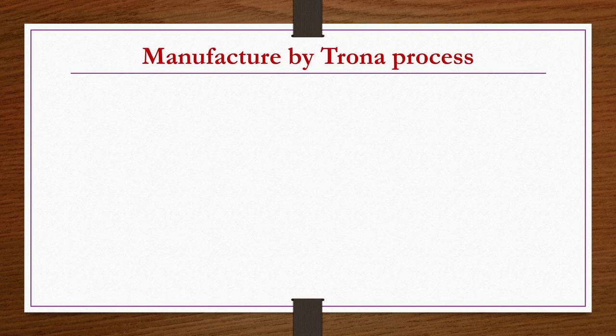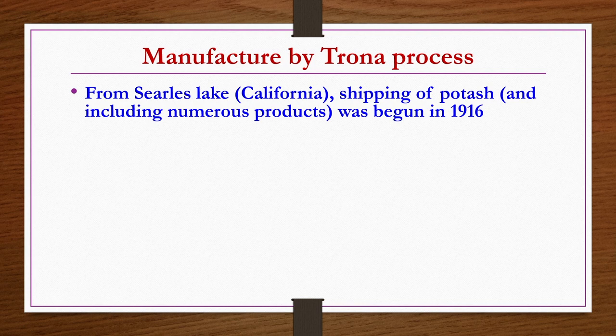Now we see manufacture by the Trona process. In this process, saline brine solution is processed through several steps to get several products like potash, borax, soda ash, etc. The solution is taken from lakes — for example, Searles Lake in California, from which shipping of potash along with numerous other potassium-derived products began in 1916.